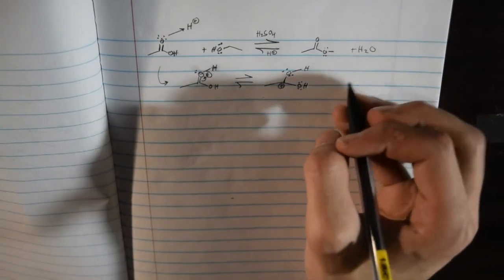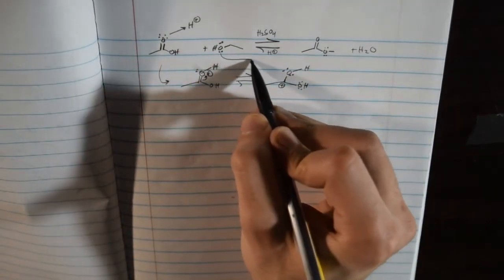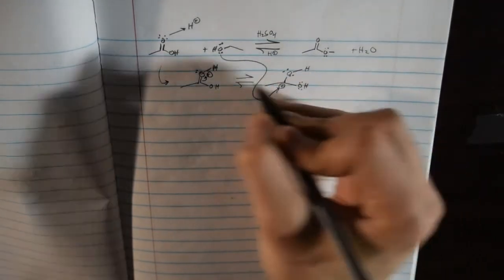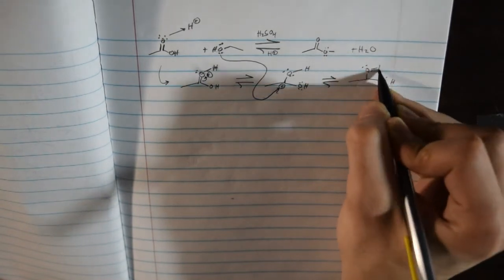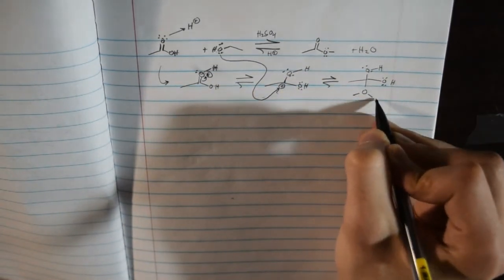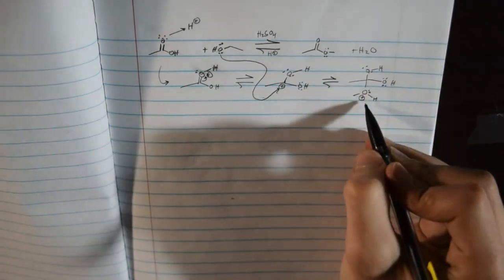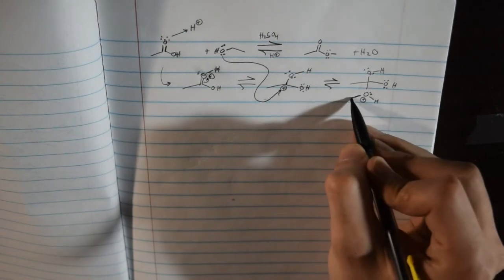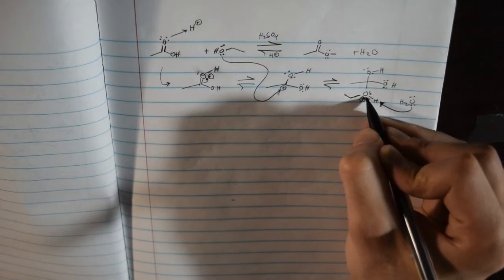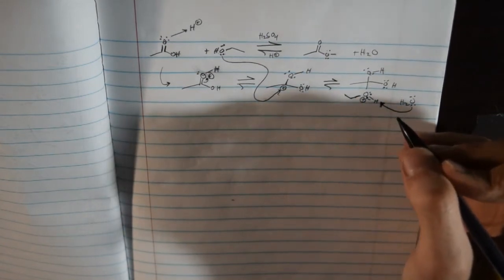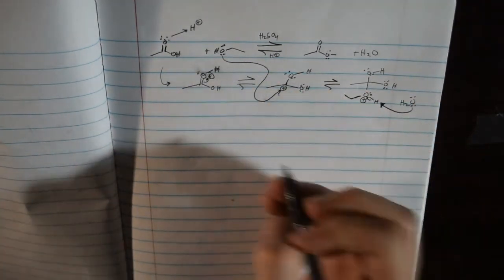When the carbon is positively charged, the ethanol's oxygen — with its lone pairs — attacks it and forms a bond, creating this intermediate species where the positive charge is on the oxygen that just attacked. Then water in solution can attack the hydrogen and pop those electrons into the oxygen, removing the positive charge and making the compound more stable.